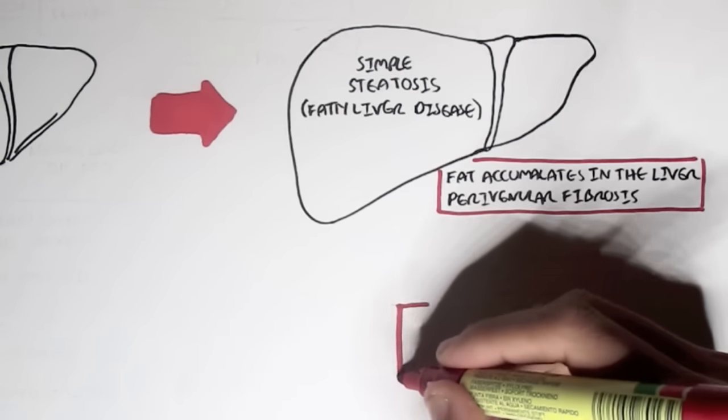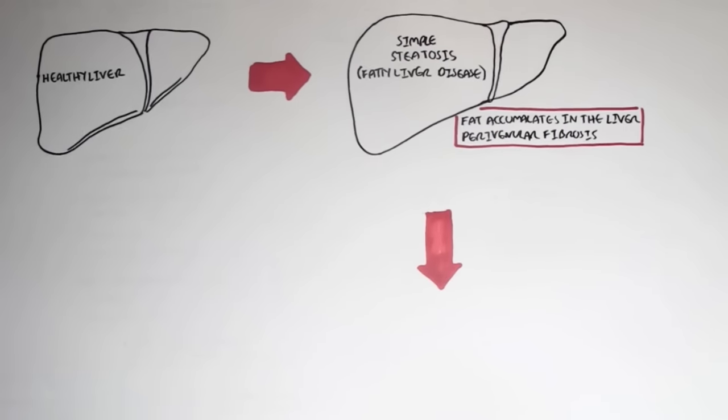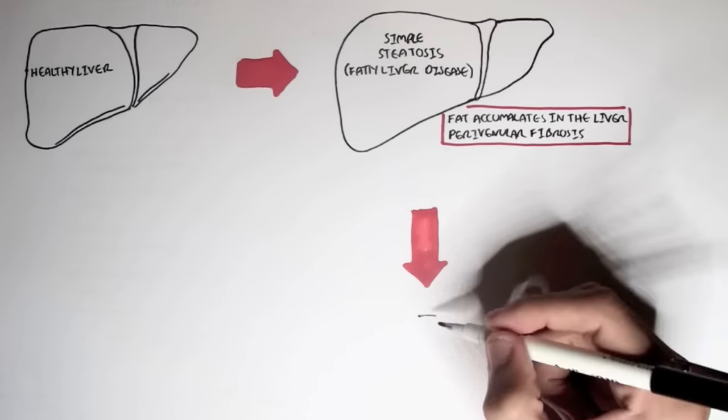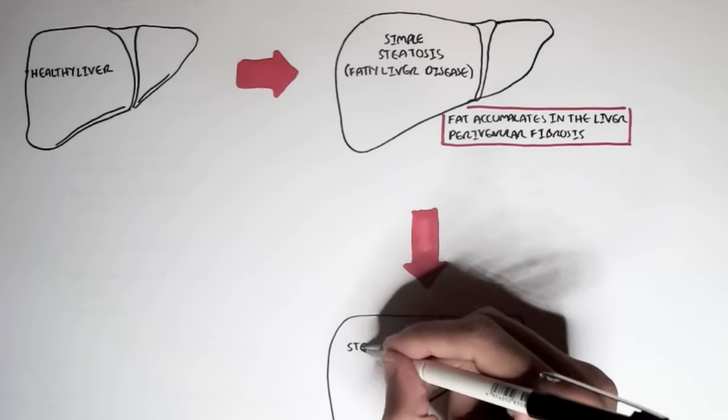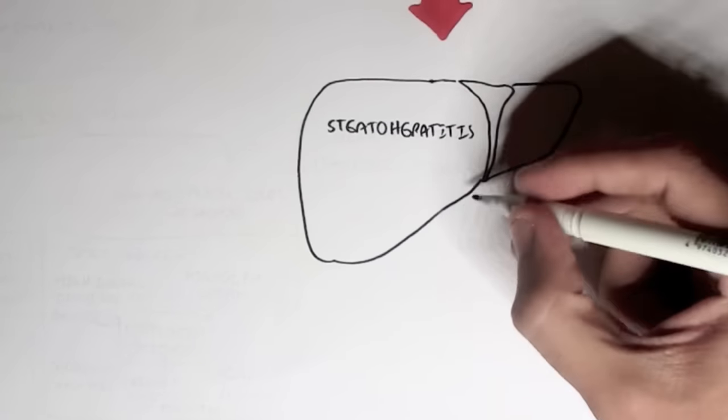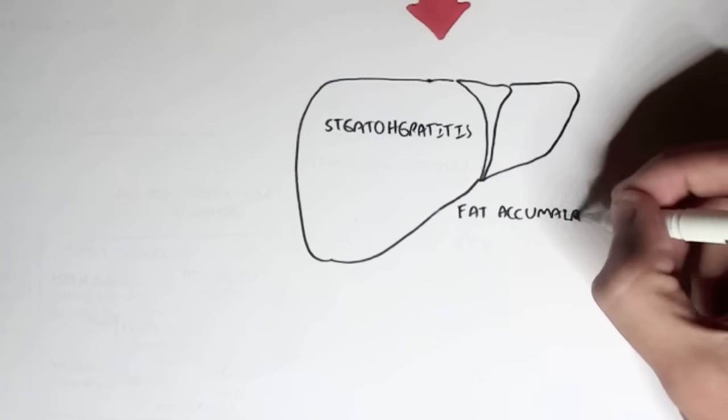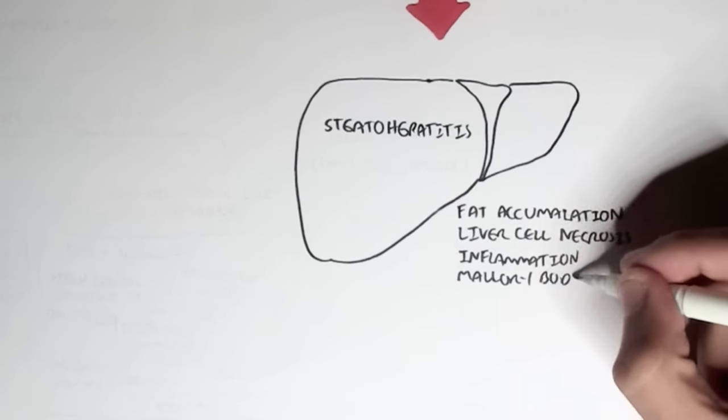And of course, if this continues on, if we keep taking in bad food, ethanol, drugs, this will lead to inflammation, essentially a dangerous state known as steatohepatitis. And this is where we have fat accumulation. We start seeing liver cell necrosis, inflammation, Mallory body formations, and fibrosis. This is fatty liver disease.